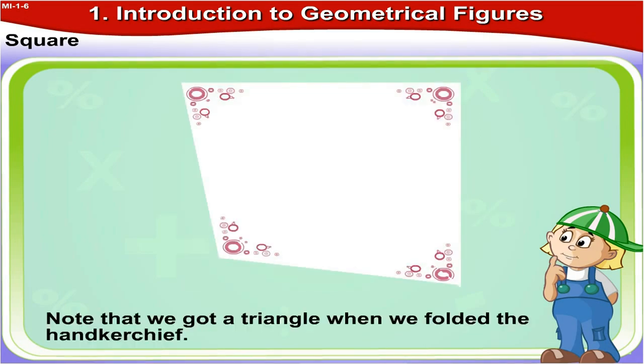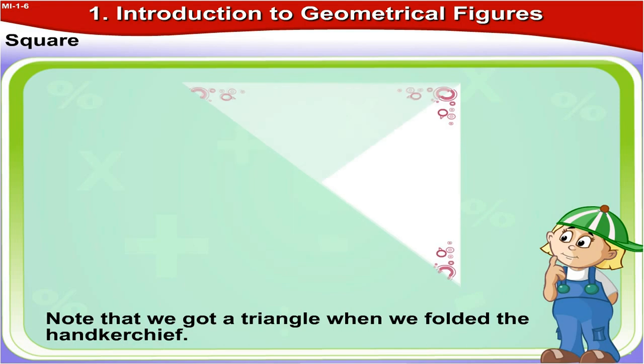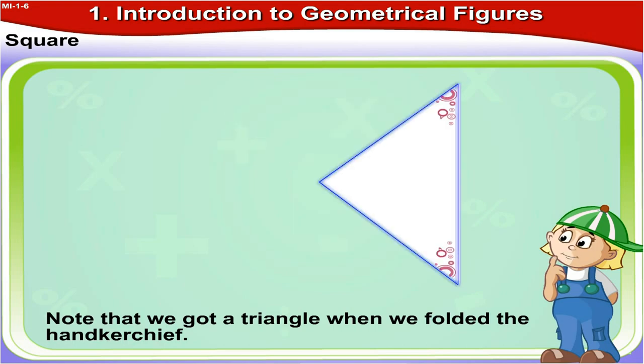Now fold the handkerchief over again. All the edges match in length. So all the edges of a square are of equal length. Note that we got a triangle when we folded the handkerchief.